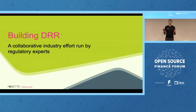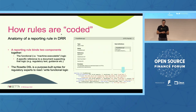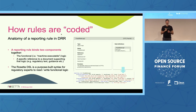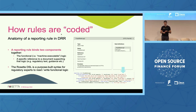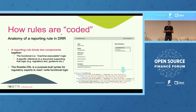Building DRR is a collaborative industry effort run by industry experts. A reporting rule binds two components together. The first component is the functional logic of the rule, which is machine-executable — unambiguous, can be executed by a machine. Equally importantly, there is a specific reference to a document or set of documents that support that logic — regulatory texts, guidance, technical specifications. The Rosetta DSL is a purpose-built syntax that allows regulatory experts and business analysts to read and write that functional logic.